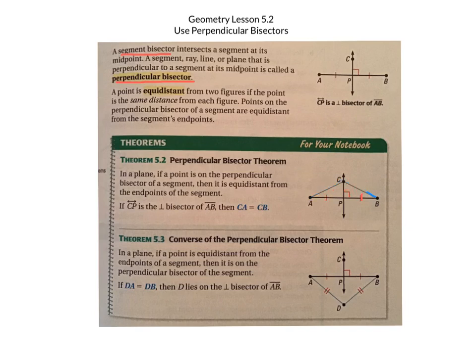Mathematically, that means they're going to have the same measurements when you're solving for the math. Now the converse of the perpendicular bisector theorem states: in a plane, if a point is equidistant from the endpoints of the segment, then it is on the perpendicular bisector. So if D to B equals D to A — shown by those two tick marks — then point D lies on the perpendicular bisector, line CP.